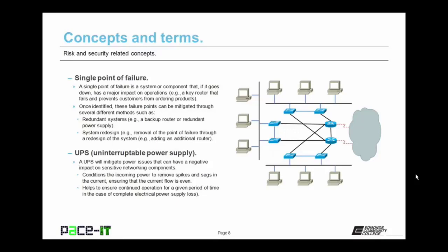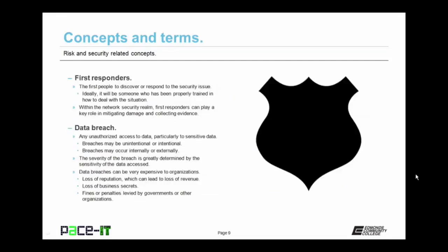You should also be familiar with uninterruptible power supplies, or the UPS. A UPS will mitigate power issues that can have a negative impact on sensitive networking components. It conditions the incoming power to remove spikes and sags in the current, helping to ensure that the flow of current is even and consistent. They also help to ensure the continued operation, at least for a given period of time, in the case of complete electrical power supply loss. Depending upon your UPS, you may be able to run for minutes, hours, or possibly days if you have a generator.